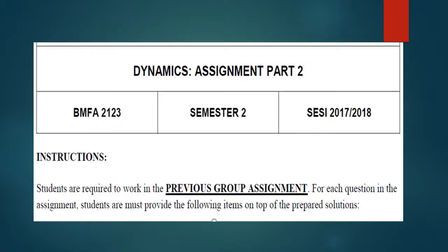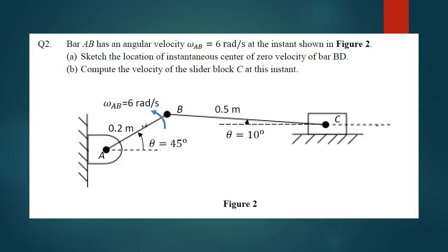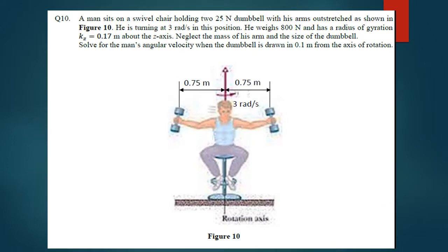Hello everyone. Today, my group member and I will explain the dynamic assignment part 2, which covers the solution of two questions. We will do question number 2 and number 10. For question 2, we will discuss the solution of the instantaneous center of zero velocity of bar BD. For question 10, we will discuss the radius of gyration of the dumbbell at the rotation axis.